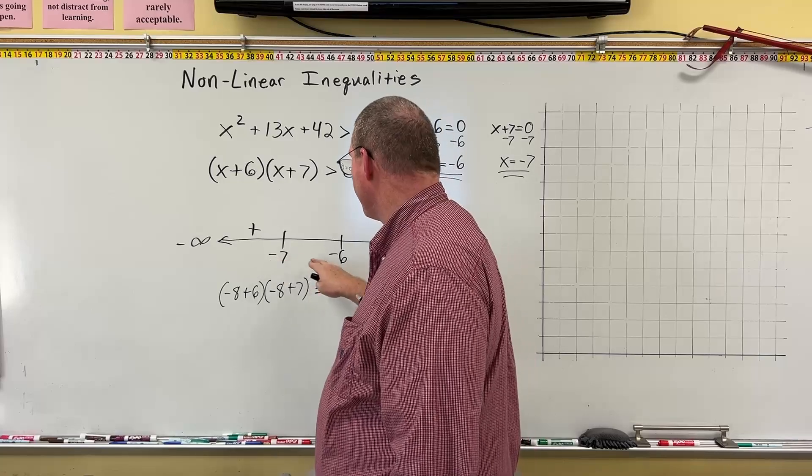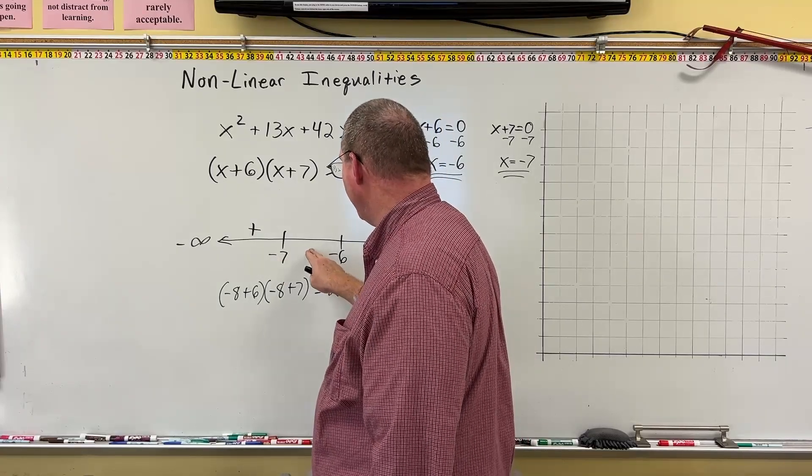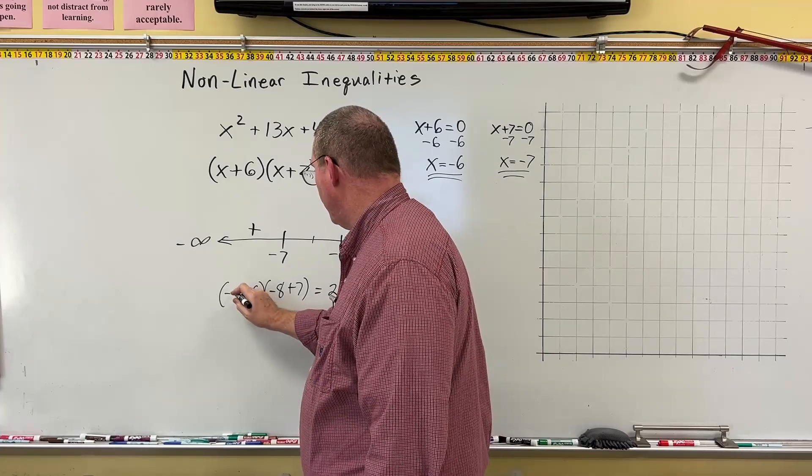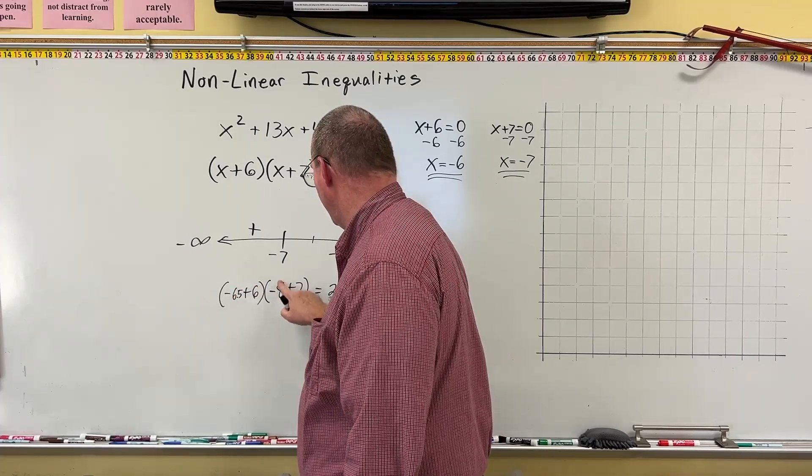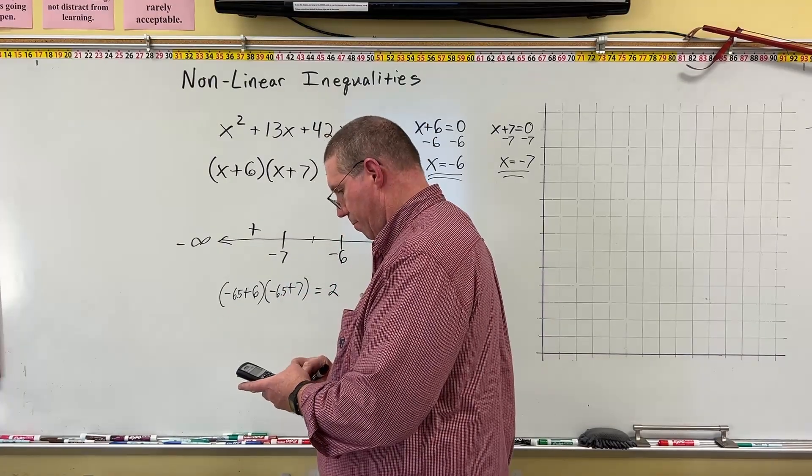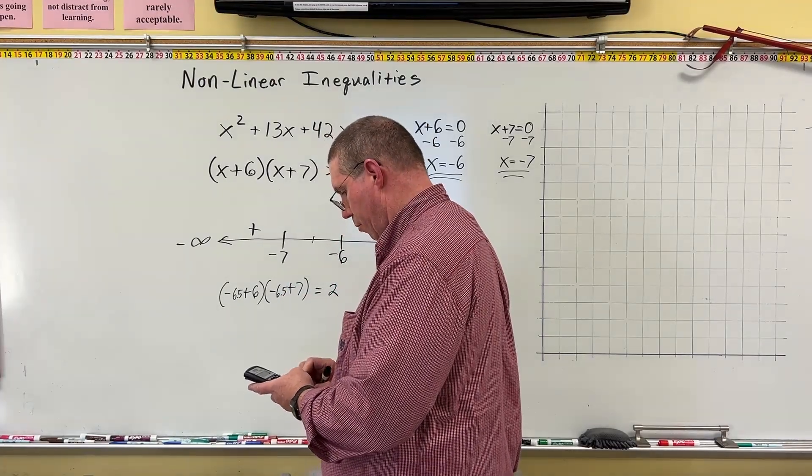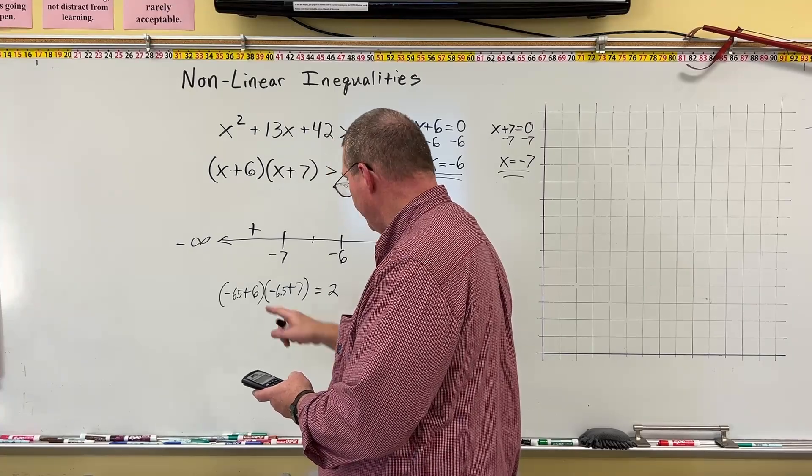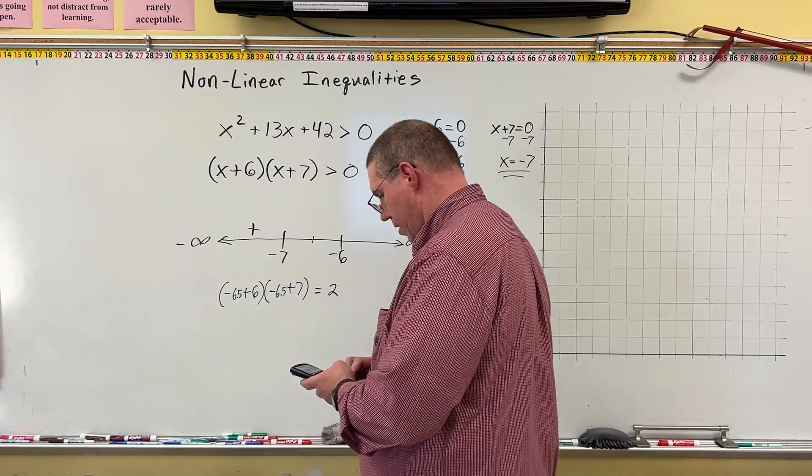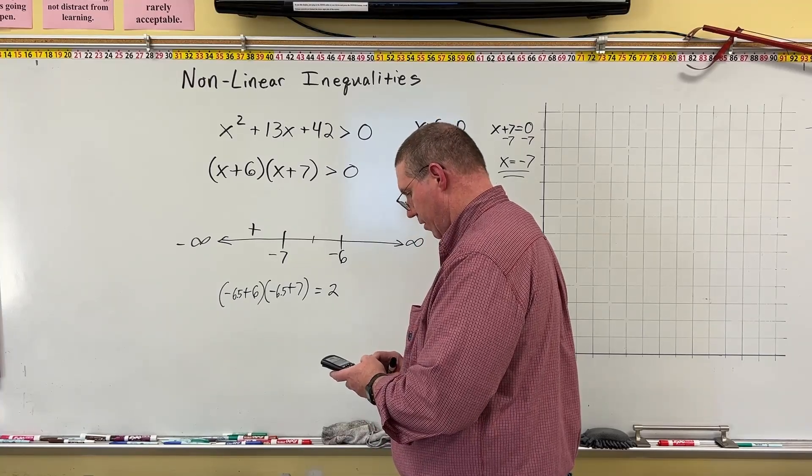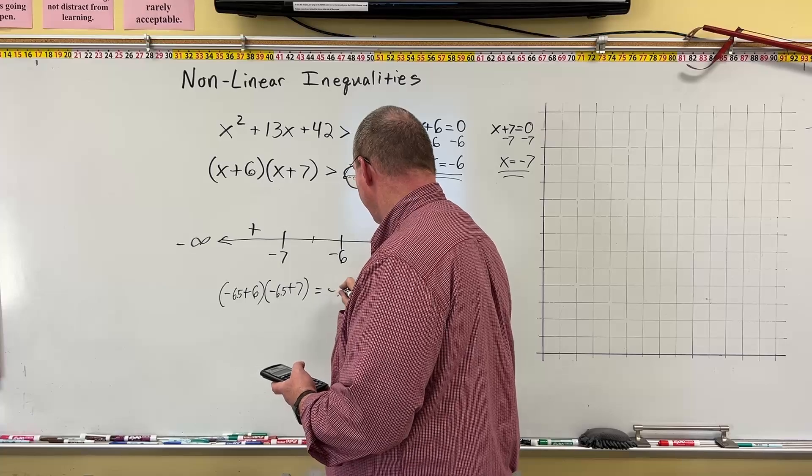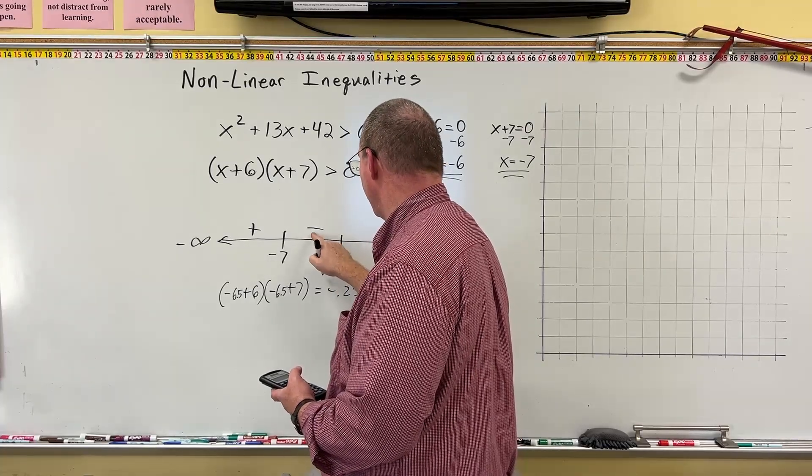Now I want to do a number between negative 7 and negative 6. Well, I know negative 6.5 is right about here. So I'm going to put in negative 6.5. So negative 6.5. So parenthesis first, negative 6.5 plus 6, close, times, parenthesis, negative 6.5 plus 7, close. And that gives me negative 0.25. Negative 0.25, which is a negative number, so I'll put a minus there.